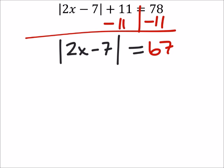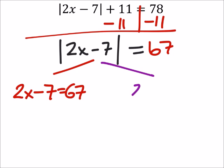Then I need to split this up into two equations. The first one will be positive: 2x minus 7 equals positive 67. And the other one, still 2x minus 7, but this equals negative 67.